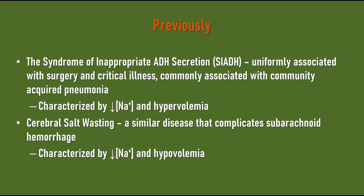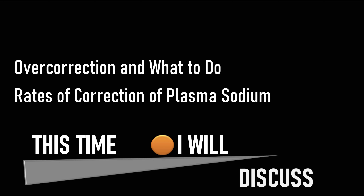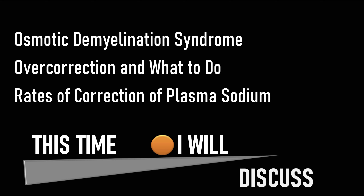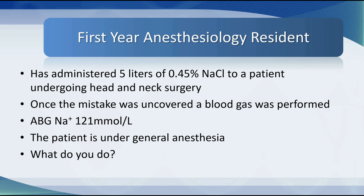In the previous tutorial I discussed the syndrome of inappropriate ADH secretion, otherwise known as the syndrome of inappropriate antidiuresis. This is uniformly associated with surgery and critical illness and also commonly associated with community acquired pneumonia, drugs and cancers. It's characterized by a low plasma sodium and hypervolemia. I also discussed cerebral salt wasting, a similar disease that complicates subarachnoid hemorrhage, characterized by a low plasma sodium and hypovolemia. In this tutorial I will discuss the rates of correction of plasma sodium, overcorrection and what to do, and the osmotic demyelination syndrome.